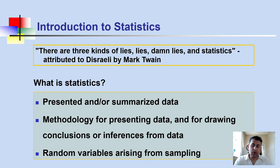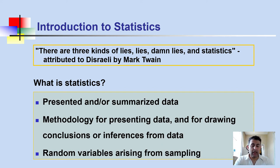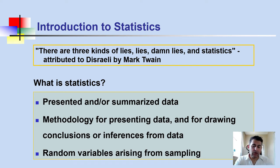For instance, if you have data about temperature and ice cream sales — say data for 10 or 20 days showing at which temperatures how much ice cream was sold — from this data we can make a forecast about the future. We also have random variables arising from the sampling process.